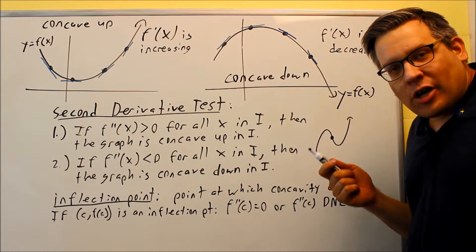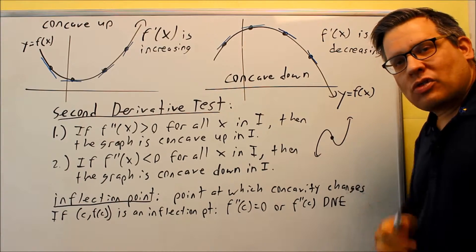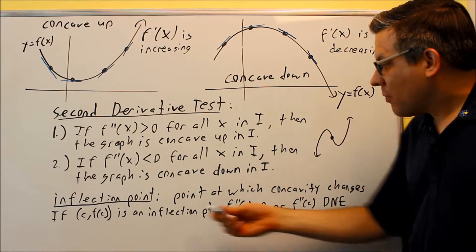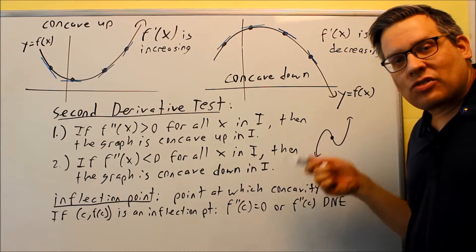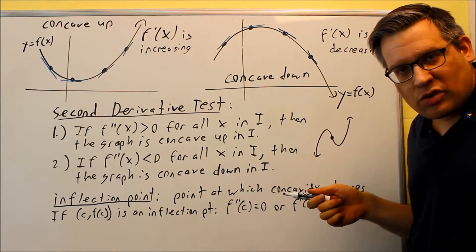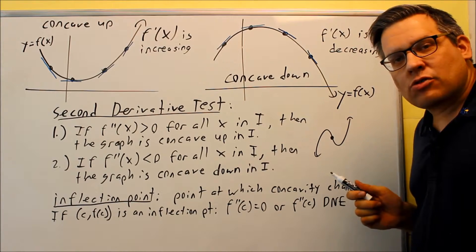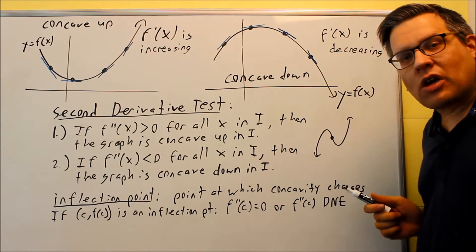So how we are going to find that algebraically, we are going to do some examples later on in this section. If you have an inflection point, you find that by either taking the second derivative setting equal to zero or it's where the second derivative does not exist or is undefined.